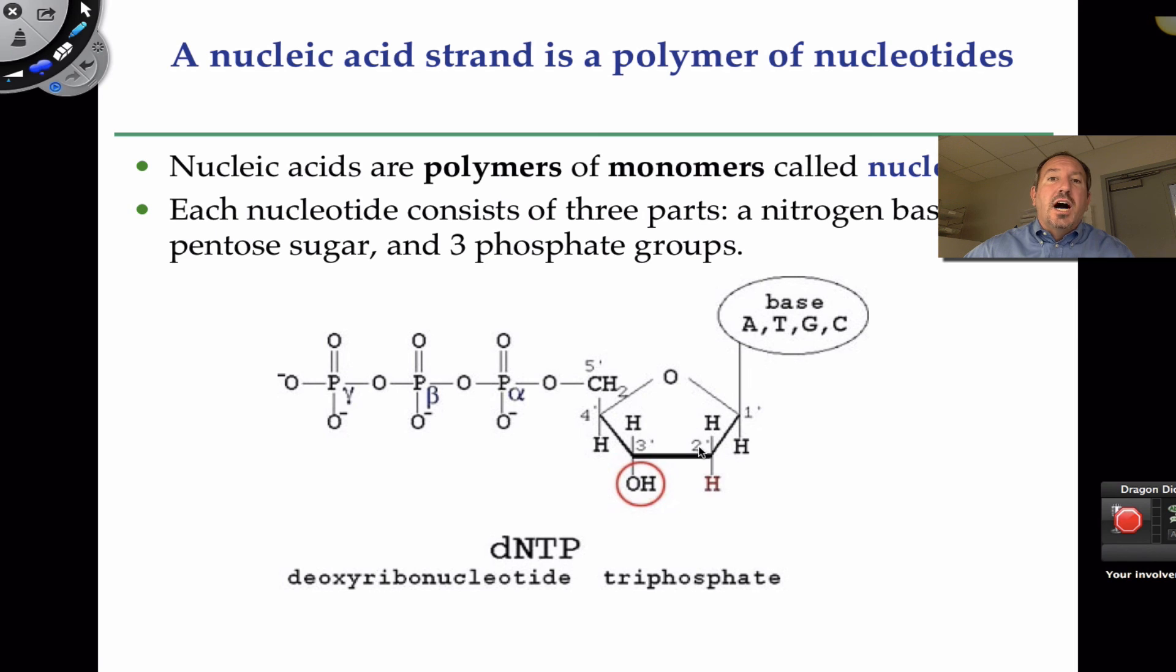This particular sugar happens to be called deoxyribose. If I notice on carbon two, there's a hydrogen coming off. Do you notice this hydroxyl is circled? If there was a hydroxyl over here, this would be the sugar ribose. But since it doesn't have that hydroxyl group, it's considered to be deoxy. D meaning not oxy, not oxyribose. So, deoxyribose.